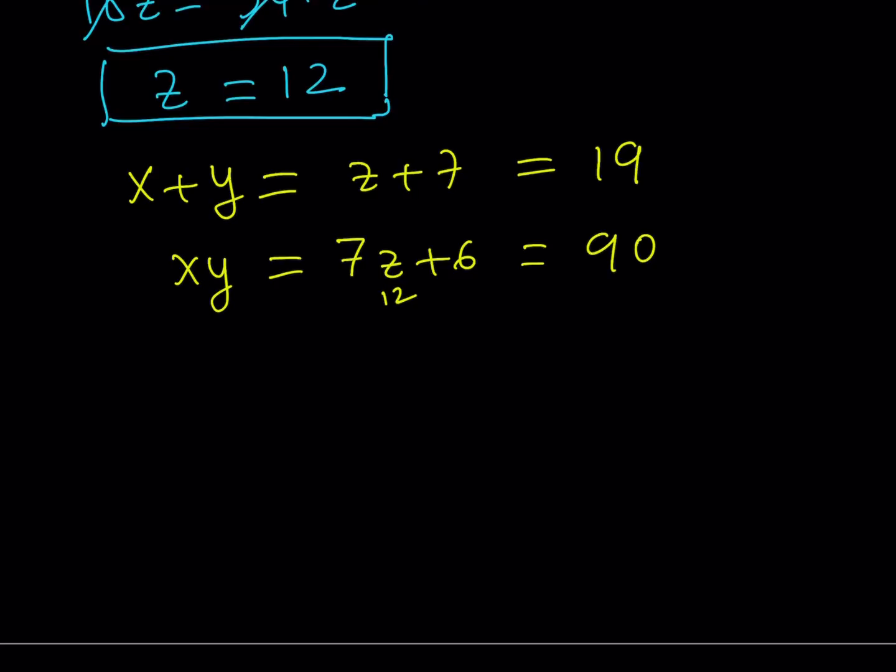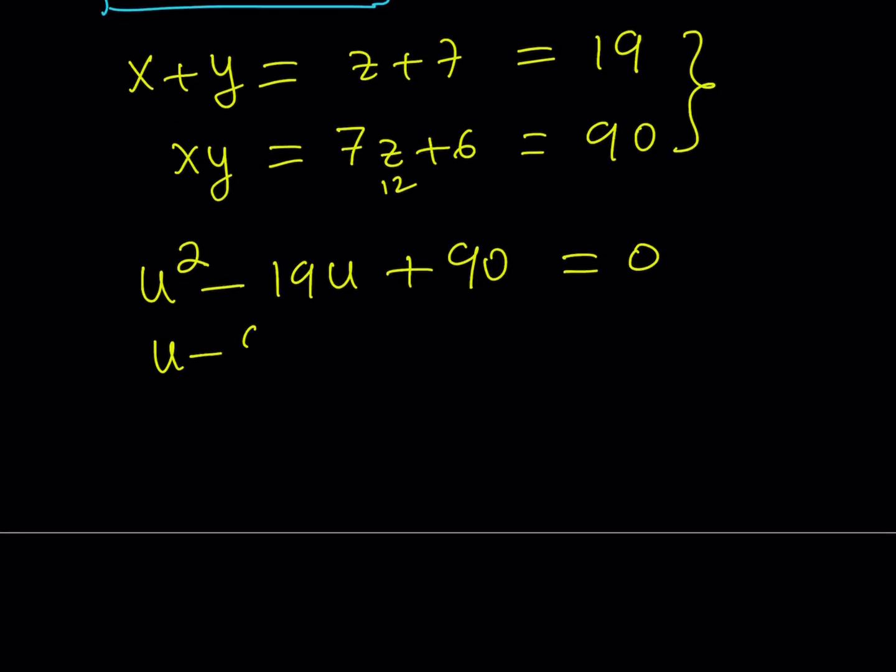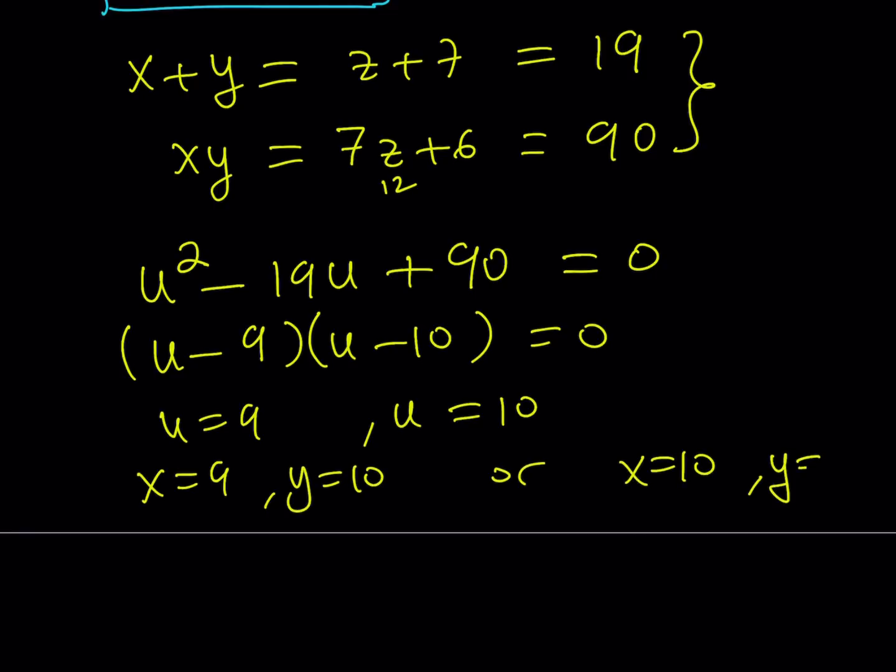So we're kind of looking for two numbers whose product is 90 and whose sum is 19. So it's kind of like this. If you make it an equation like u squared minus 19u plus 90 equals 0, u basically represents x and y and x and y are completely interchangeable. This means that this can be written as u minus 9 times u minus 10. And from here, u is either 9 or 10. Which means x can be 9, y can be 10, or x can be 10 and y can be 9.